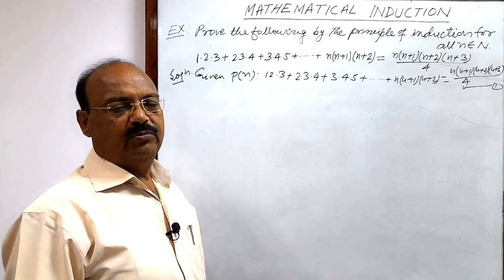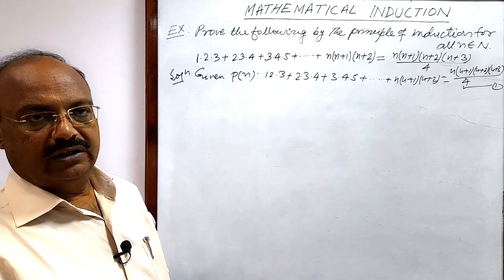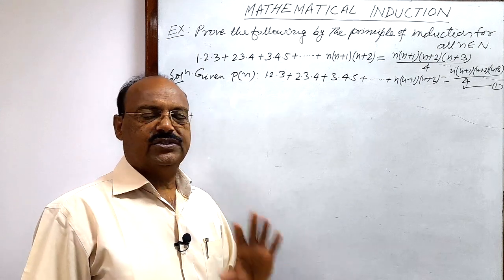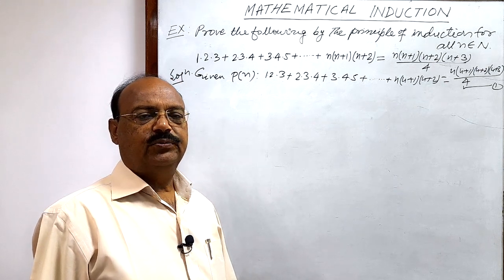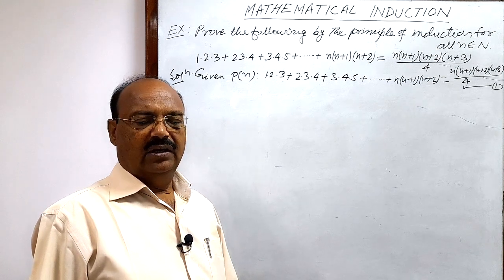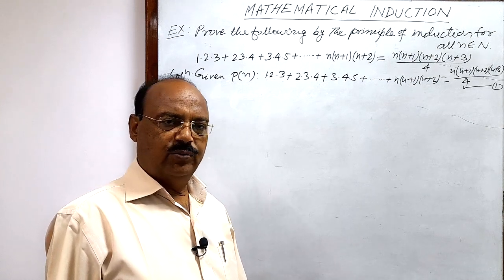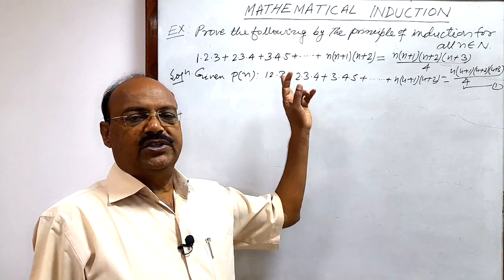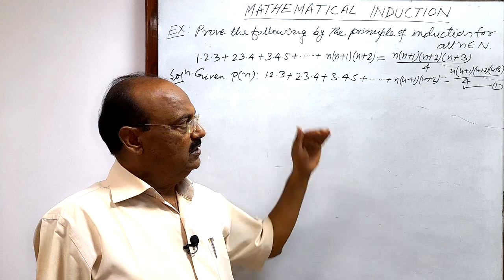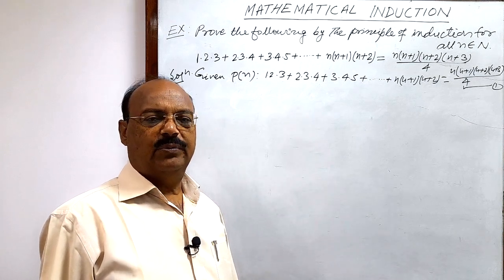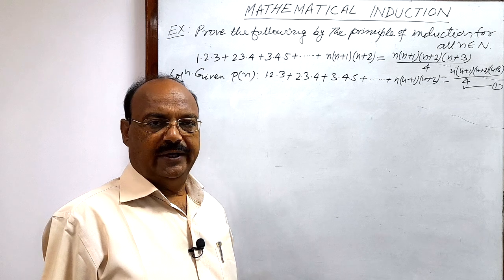We follow three steps. Step 1: we prove that P(1) is true. Step 2: we assume that P(R) is true, meaning we assume P(N) is true when n = R. Step 3: we prove that P(R+1) is true — we put n = R+1 in the statement and show LHS equals RHS. After these three steps, we conclude by the principle of mathematical induction that the statement is true for all n.